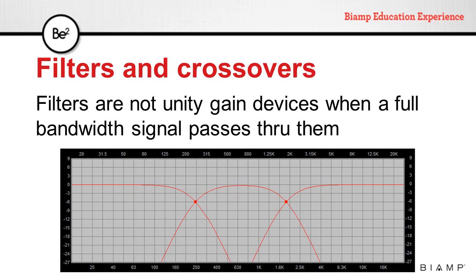Similarly, crossovers filter the signal passing through, separating it into multiple bands. Each band will have a portion of the original signal, so its level will be reduced. The amount of makeup gain required depends on the filter settings.